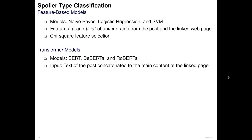For spoiler type classification we experiment with two classes of approaches: feature-based models and transformer models. We experiment with three classical models — Naive Bayes, Logistic Regression, and Support Vector Machines — using TF and TF-IDF features of uni- and bigrams from the clickbait posts and linked webpages, with G-square feature selection. We also experiment with three transformer models — BERT, DeBERTa, and RoBERTa — which use the post text concatenated to the main content of the linked page as input for classification.